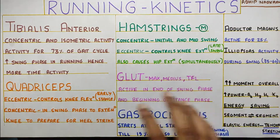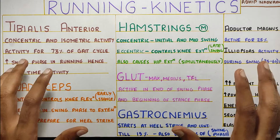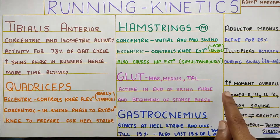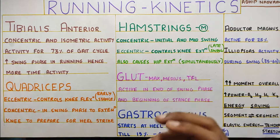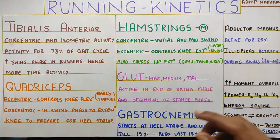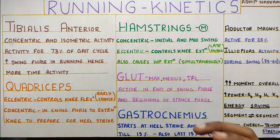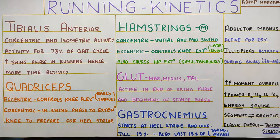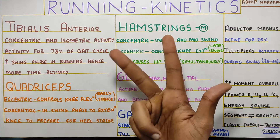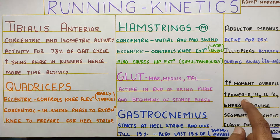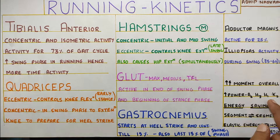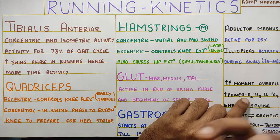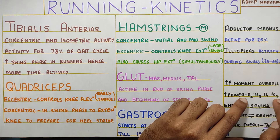Now, to kind of summarize this whole thing: what was seen is that in running gait, your moments — that is the forces that are created at the joints — are much higher. The eccentric activities, or the power generation and absorption that is seen at each joint — if you don't know what these terms are, like A2, H3, H1, you can check my video on power generation and absorption where I have spoken about all of these. Compared to walking, these are much higher in running.